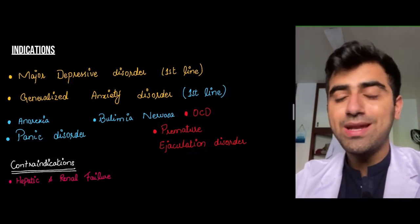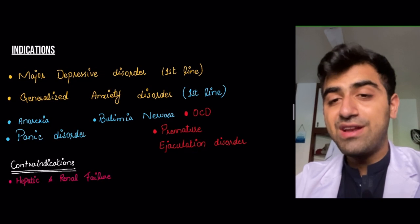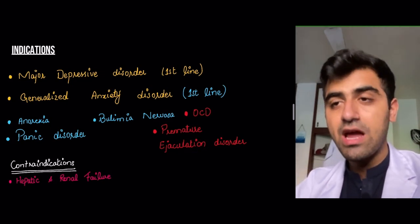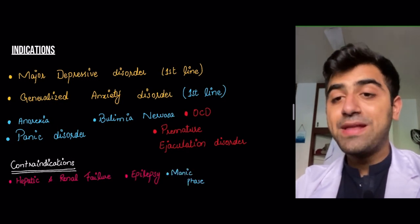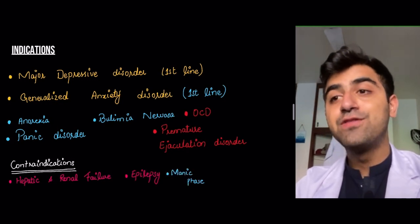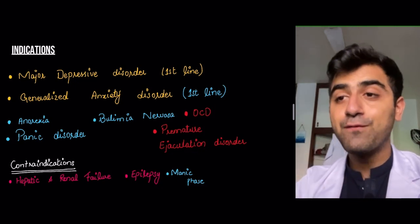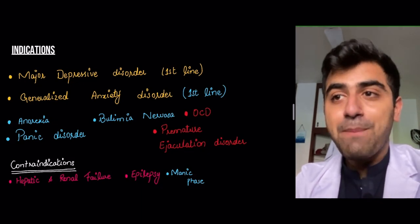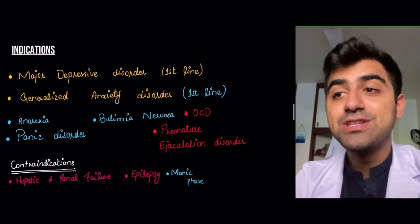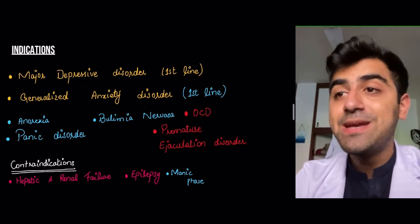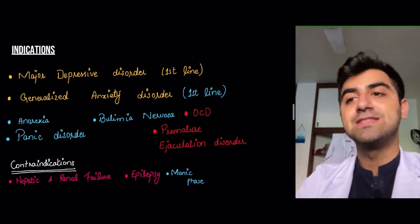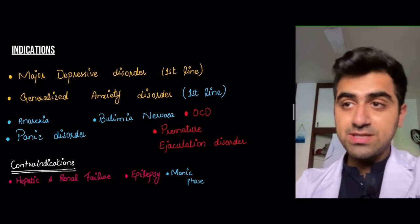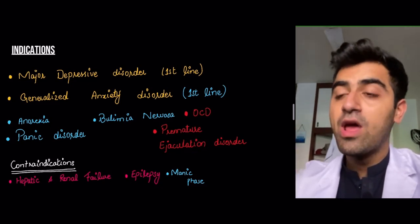Contraindications include hepatic and renal failure — though for renal failure, renally adjusted doses can also be prescribed. Epilepsy is also a contraindication. The manic phase of bipolar disorder is particularly important: if a patient presents in the depressive phase of bipolar disorder and you prescribe an SSRI, you might precipitate a manic phase in that patient.